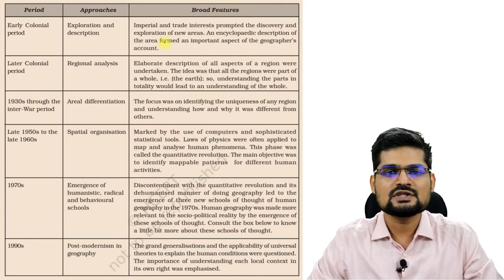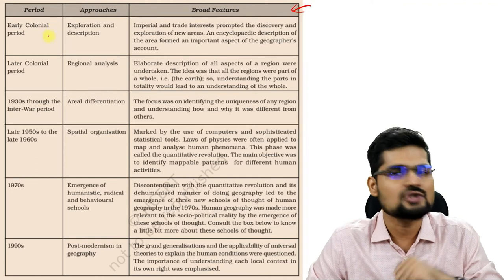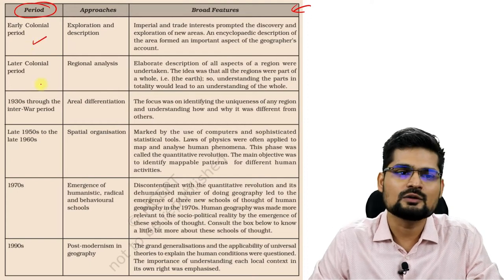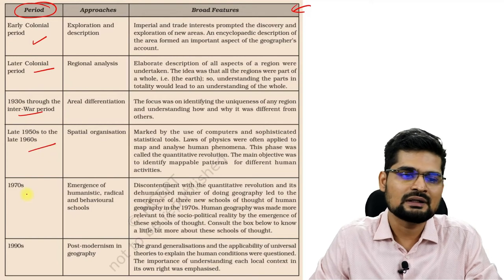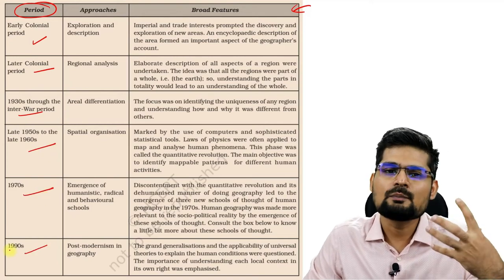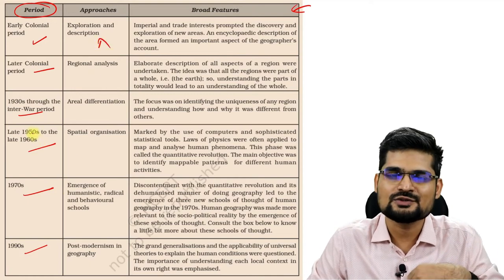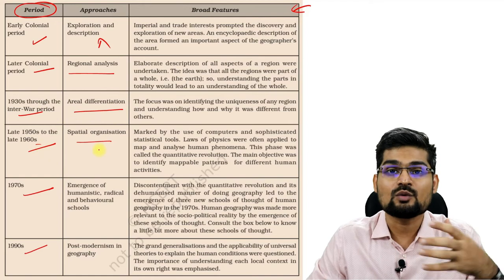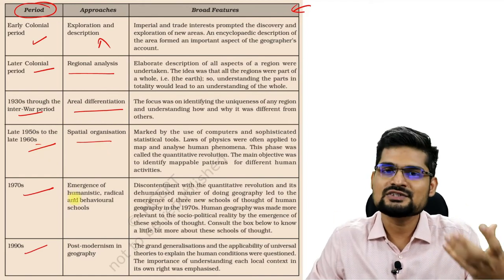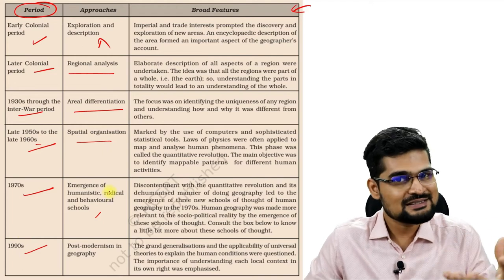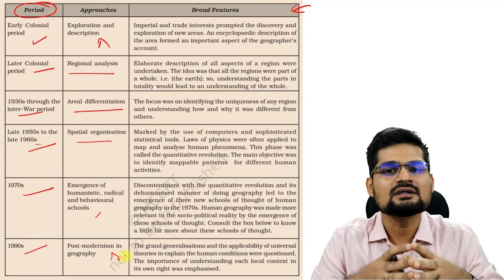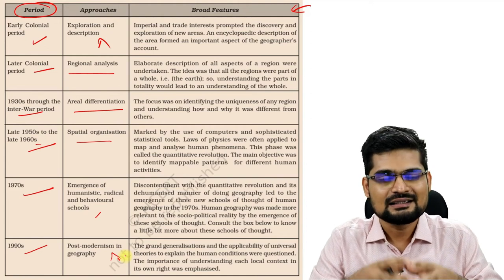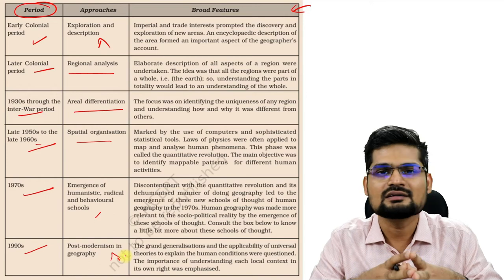There are certain approaches and broad features listed here from your NCERT human geography. You can go to the NCERT and study this through periods — from early colonial period to later colonial period in the 1930s, after independence in the 1970s and 1990s — how these approaches of human geography changed. Earlier more exploration and description was used. Then regional analysis came. Area differentiation dominated. Spatial organization started in the 50s and 60s where the quantitative revolution took place. Then came the emergence of humanistic and behavioral schools of thought, radical school of thought, feminism, and post-modernism after the 90s when the world became completely globalized and the rise of global cities occurred.